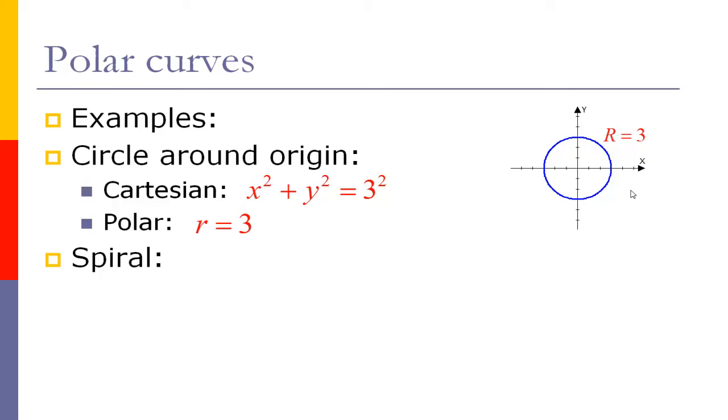Well what about something a little bit more complicated like a spiral. So a spiral looks like this. How am I going to describe that spiral in Cartesian coordinates? Well obviously this is not a function so it does not pass the vertical line test. So I cannot describe it as y equals f of something. And in fact it turns out it is not easy to define it even as a single equation.